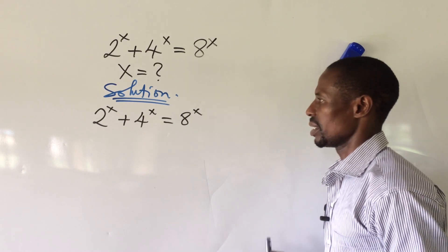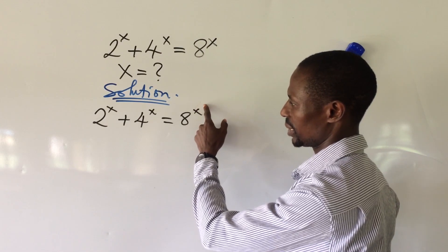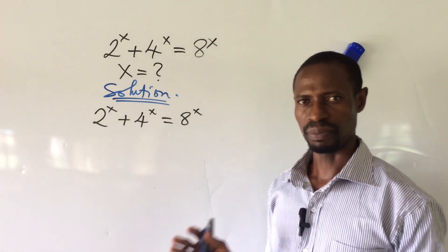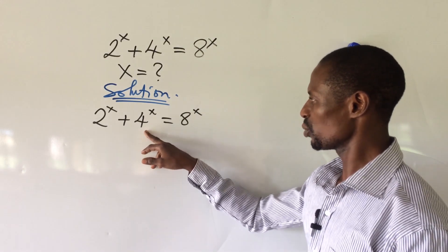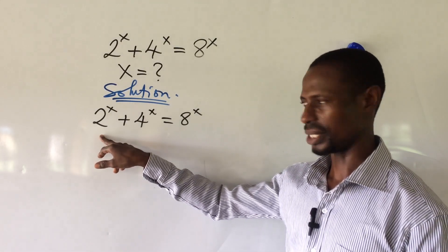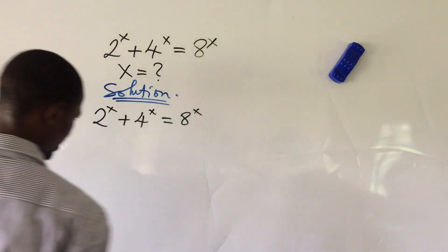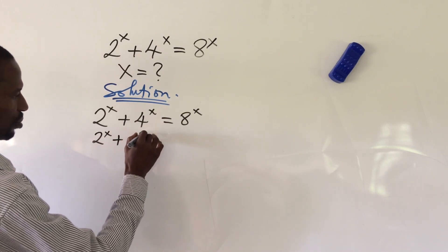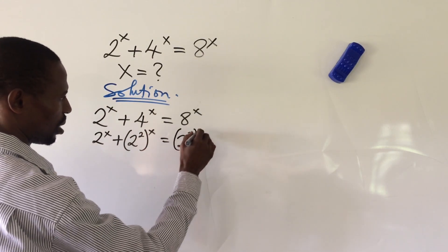Now look at the method. We know 4 can be expressed as 2 to the power of 2, and 8 can also be expressed in this base. So if we rewrite this expression, we're going to have 2 to the power of x plus 2 to the power of 2, all to the power of x, equal to 2 to the power of 3, all to the power of x.